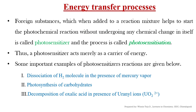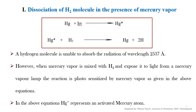Foreign substances which, when added to a reaction mixture, help to start a photochemical reaction without undergoing chemical change themselves are called photosensitizers, and the process is called photosensitization. We have different examples of photosensitization: first, dissociation of hydrogen molecule in the presence of mercury vapor; second, photosynthesis of carbohydrates; and third, decomposition of oxalic acid.